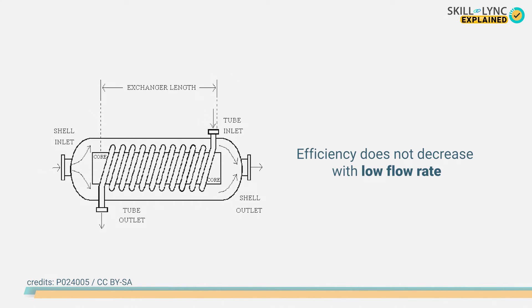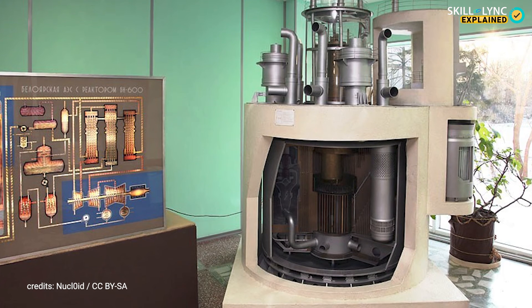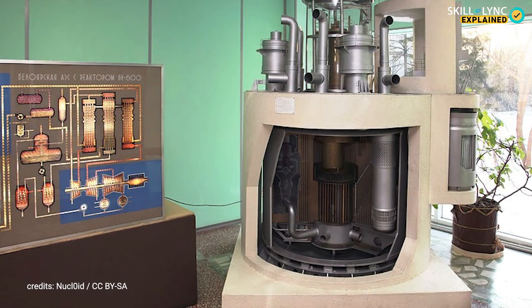Moreover, when the flow rate is low, the efficiency of shell and tube type heat exchangers is decreased, but this is not the case with helical coil heat exchangers. The cleaning of helical coil heat exchangers can be difficult as compared to straight shell and tube type, but at the same time, helical coil heat exchangers require cleaning less often. These exchangers are most widely used in liquid metal fast breeder reactors.